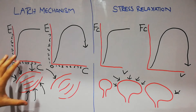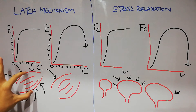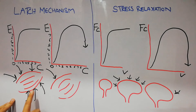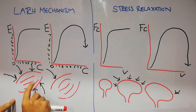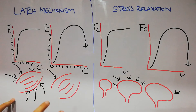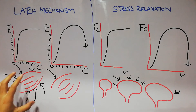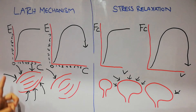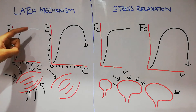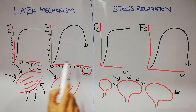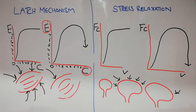We explain the latch mechanism with the help of a graph. For example, we have a smooth muscle and we want to contract it. Initially, a lot of energy in the form of nervous stimulation or hormones will be needed to contract this muscle, so the energy consumption will increase. Similarly, the excitation needed for contraction will also increase. So excitation increases, energy consumption increases, and at the same time contraction occurs.